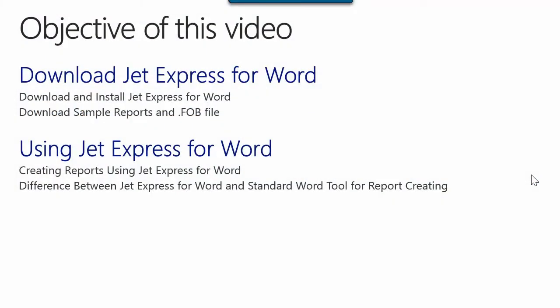At the end of this video you will learn how you can download JetExpress for Word, how you can use this tool, and what are the main differences compared to the standard Word XML mapping pane. The objectives of this video will be how you can download JetExpress for Word and sample reports with report FOB file. I will also describe how you can use JetExpress for Word samples and how you can create reports with this tool. I will present the main differences between JetExpress for Word and the standard Word XML mapping pane in the report creating process.